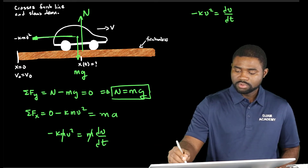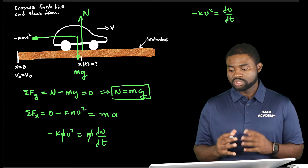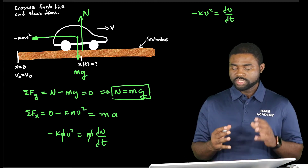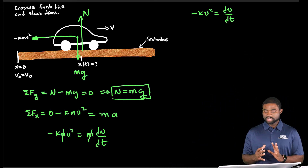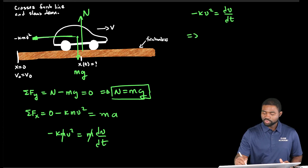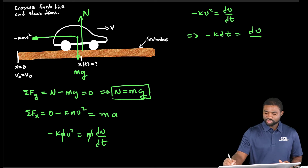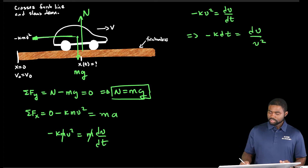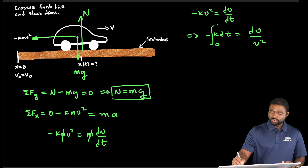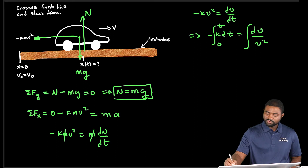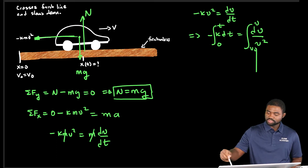We will separate the variables in order to solve this differential equation. We take the terms containing v to one side and the terms containing t to the other side. This gives negative k dt equal to dv over v². We now integrate both sides: the left side from 0 to t, and the right side from v₀ to v.